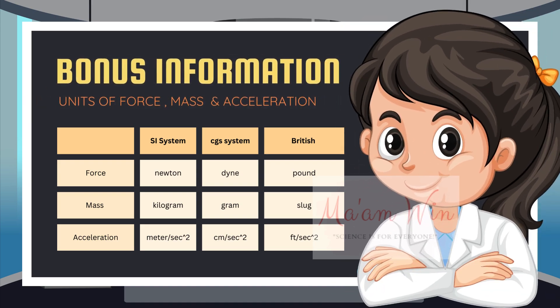Here's some bonus information. This covers the units for force, mass, and acceleration, subdivided into 3 systems: SI, CGS, and the British system. For example, force in the SI system is newton, in CGS it is dyne, and in the British system, force is measured in pounds.